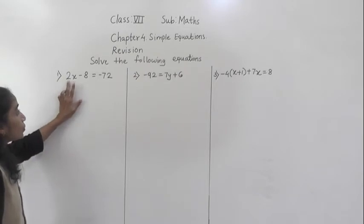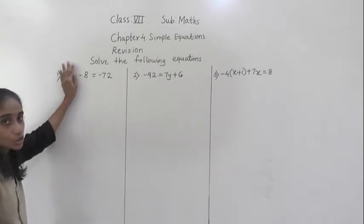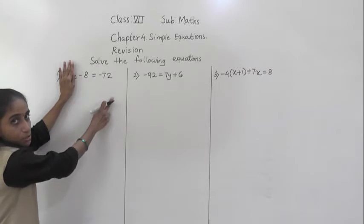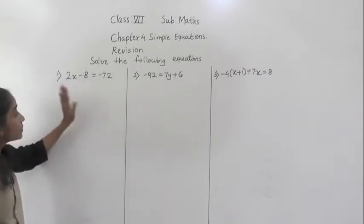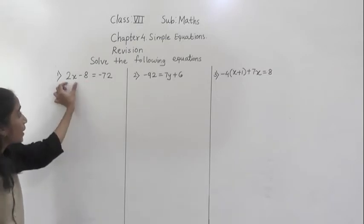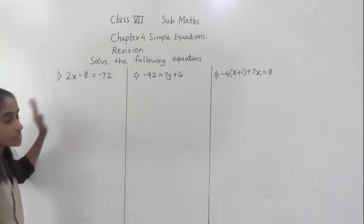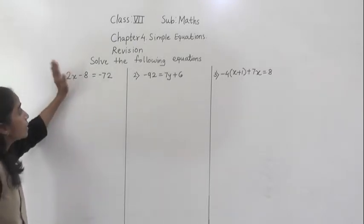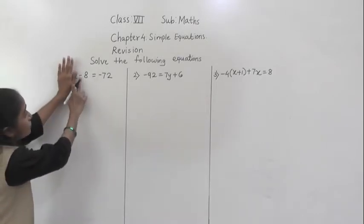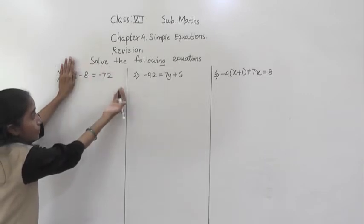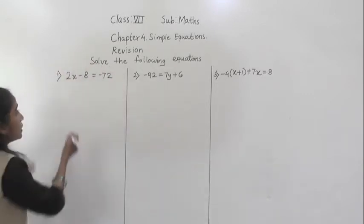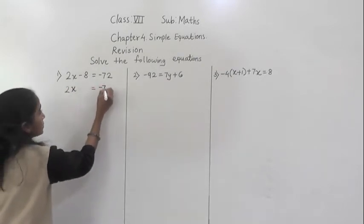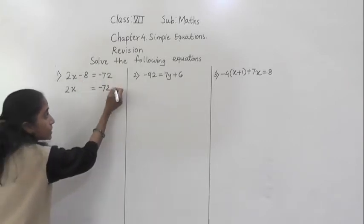Now see, 2 is with the variable 2x, so don't touch this number first. Which number are we going to transfer? This 8 — we are going to transfer 8 to the right hand side. Now 8 has which sign? The lone number is 8. See, 2x minus 8 — so don't touch 2x; 2 is with the variable. So which number is alone? 8 is alone. Now 8 is on the minus side, so if we transfer 8 to the right hand side, it will become plus. So we write 2x as it is, equal to minus 72.